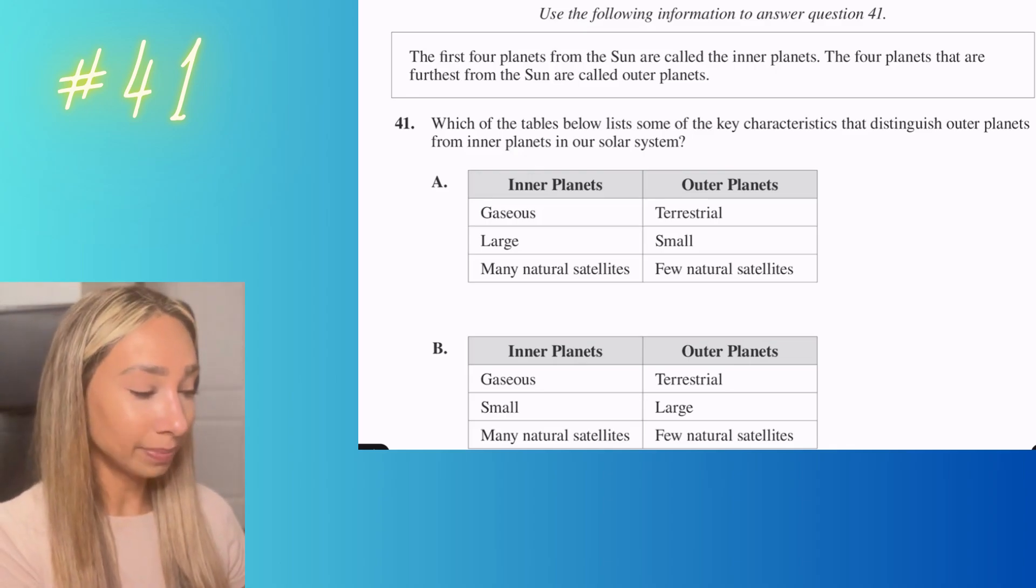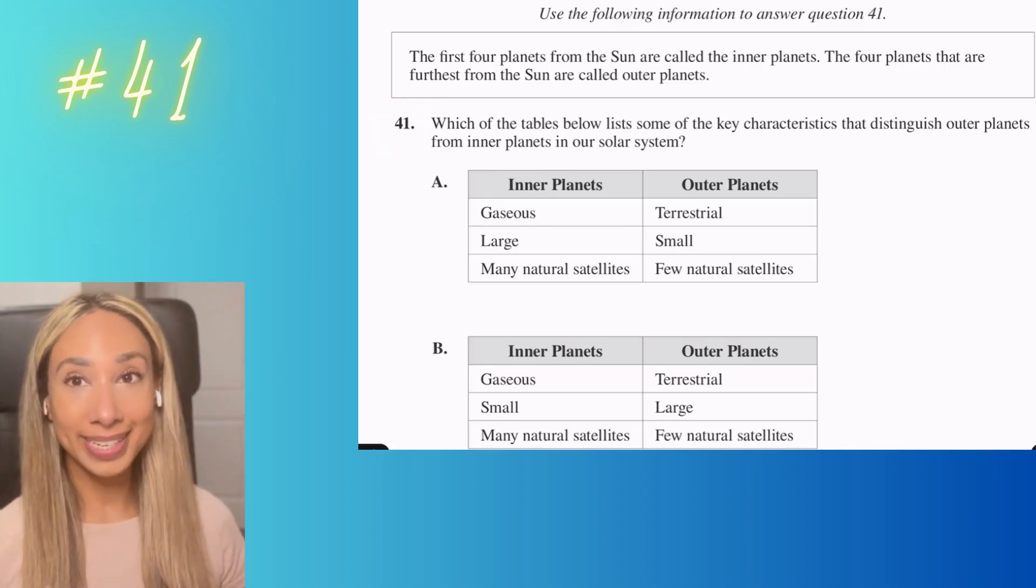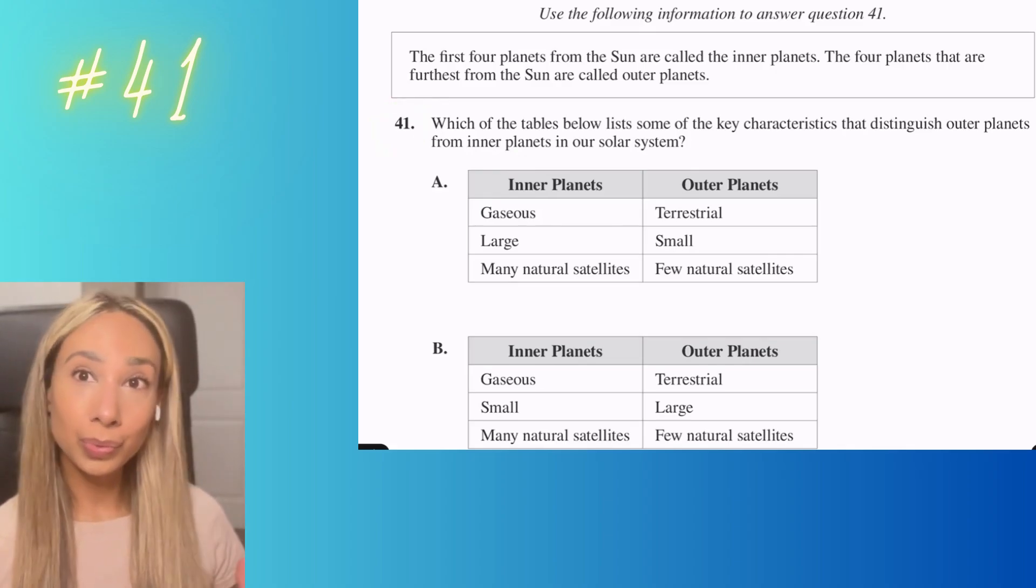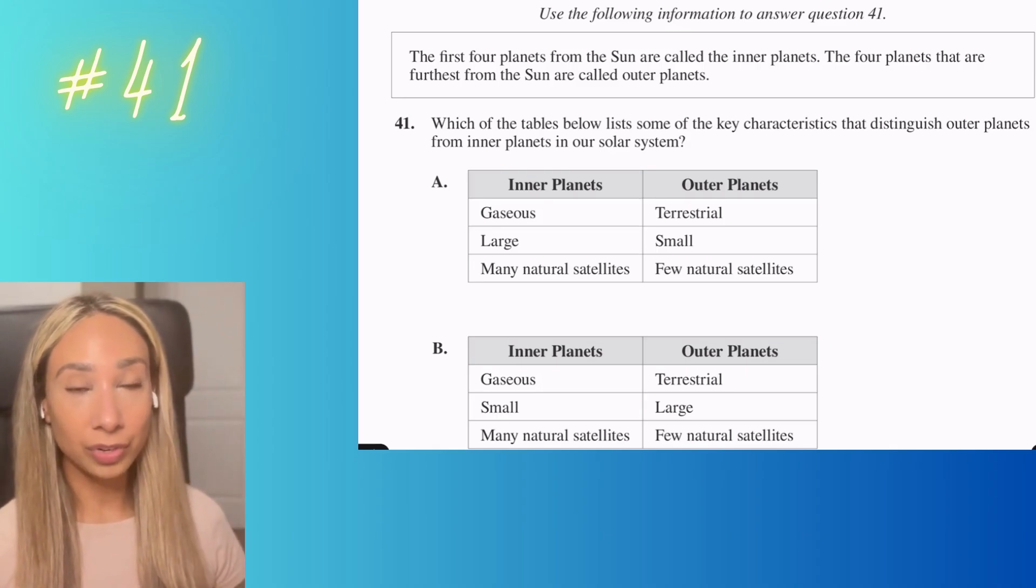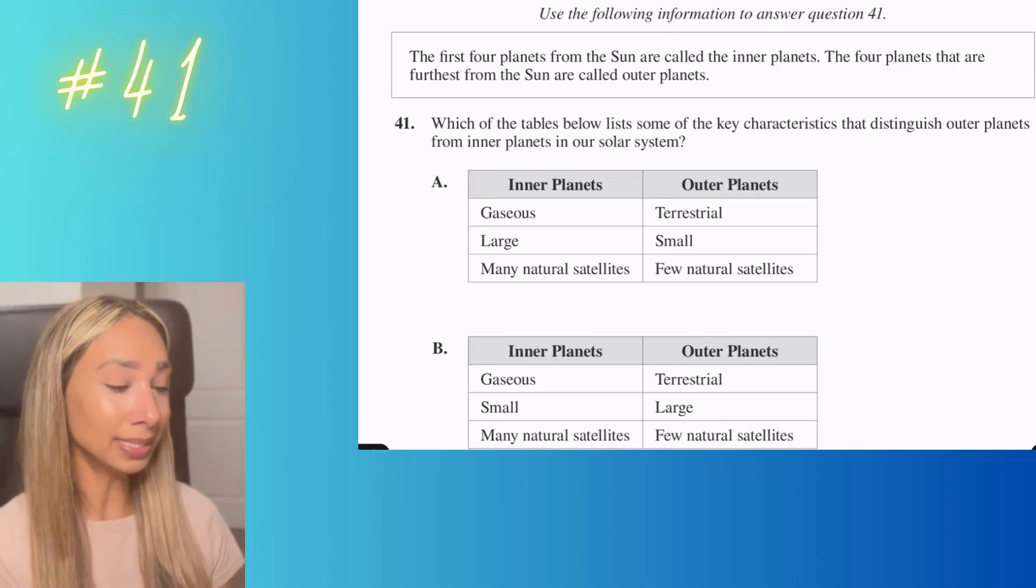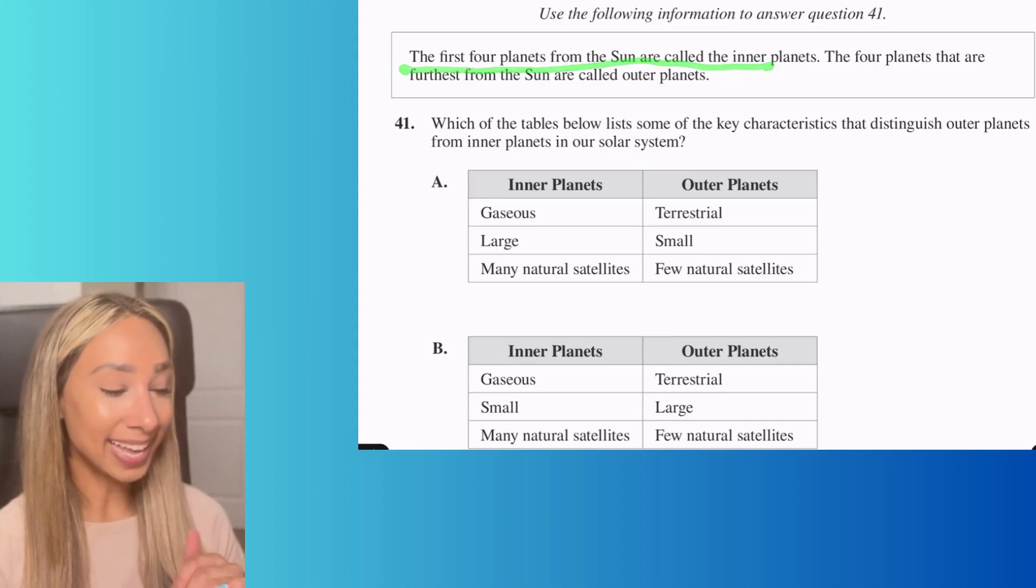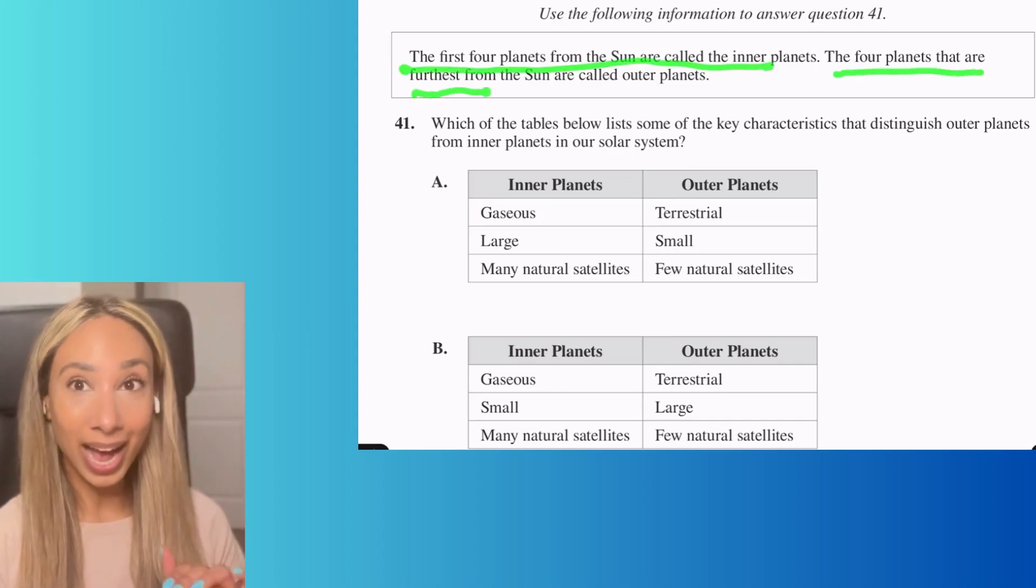Okay, number 41. With this one, what we need to do is figure out if you know the order of the planets in a rough general sense and also if you know about the different types of planets that exist. The first four planets from the Sun are called the inner planets.